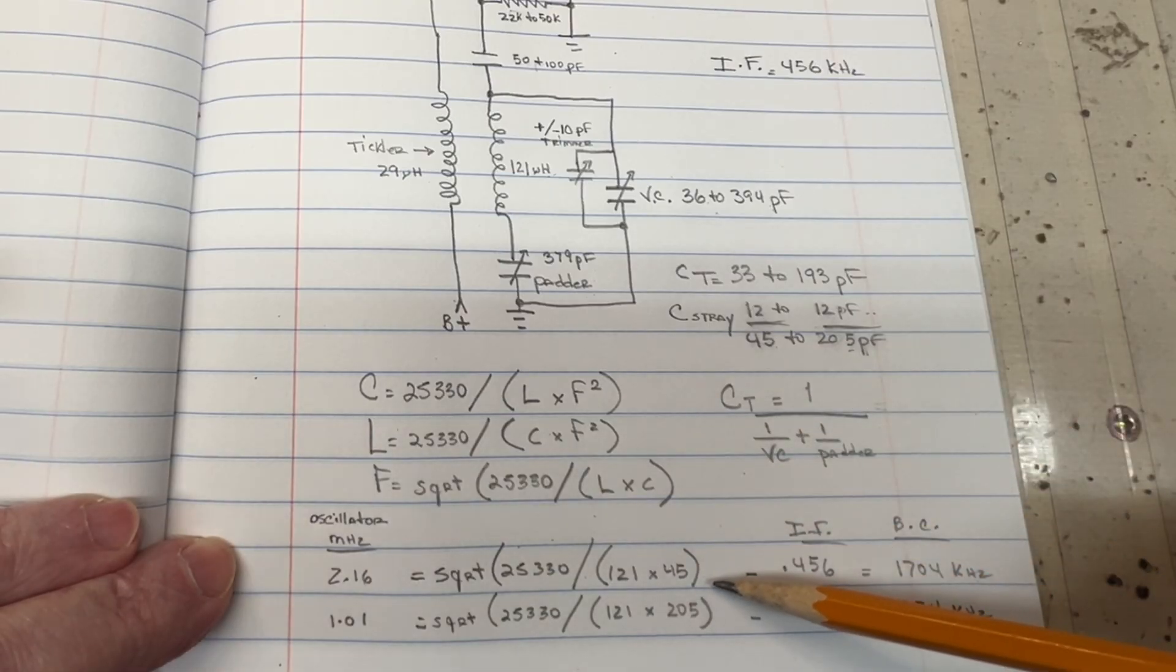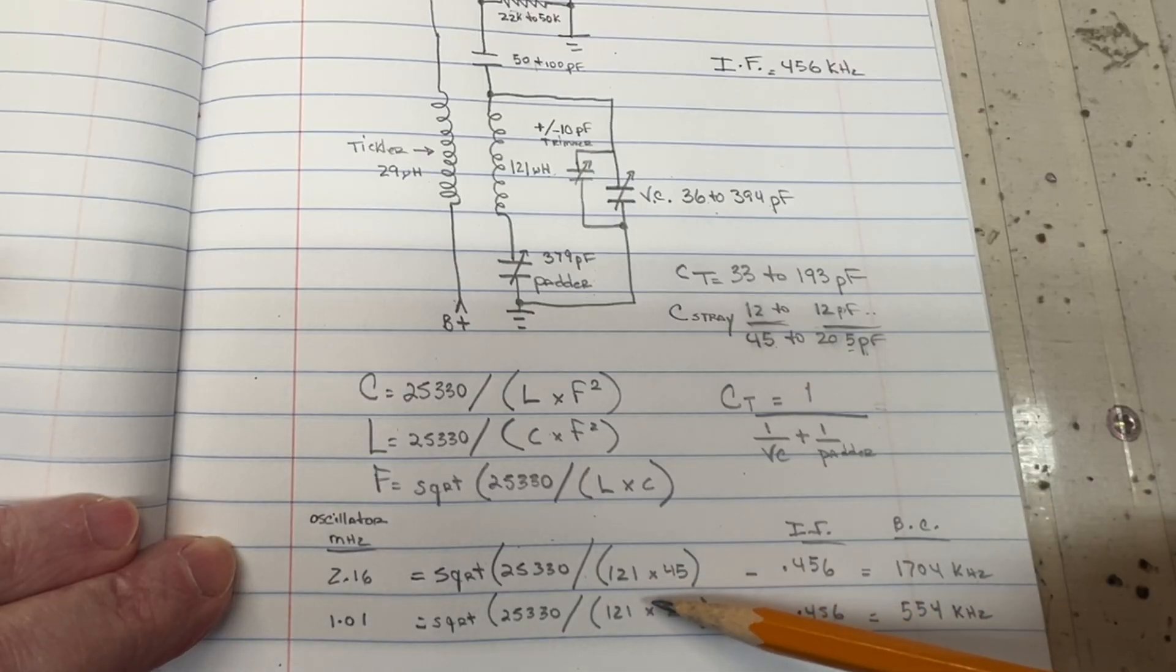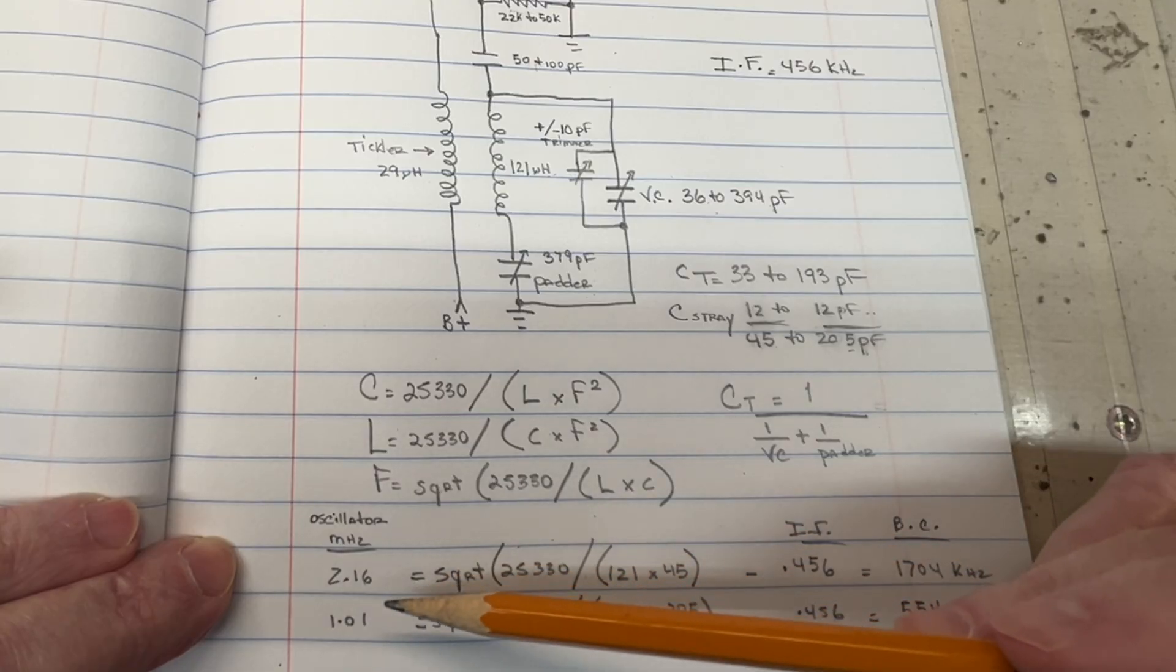I've worked the math out here. And you can see if we take the first number and look at 45 pF with the 121 microhenry inductor, that puts the oscillator at 2.16 megahertz.